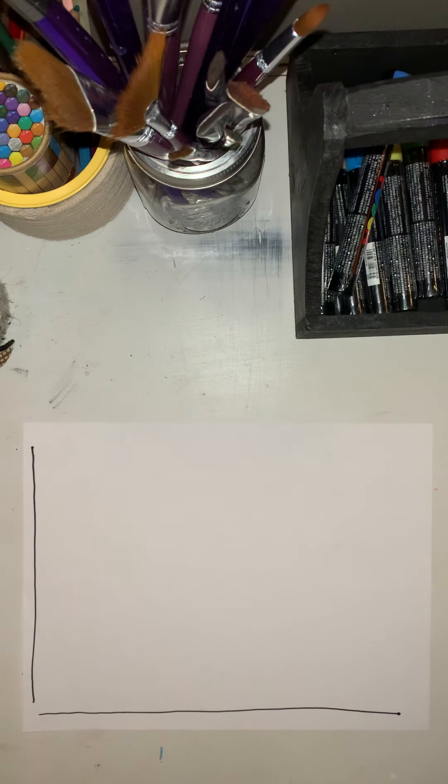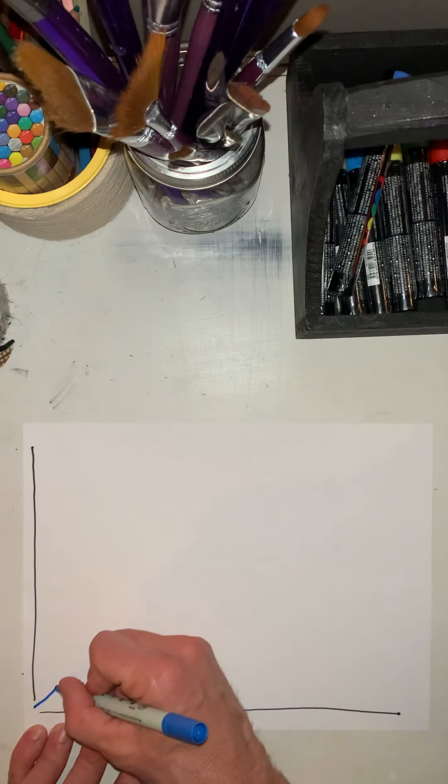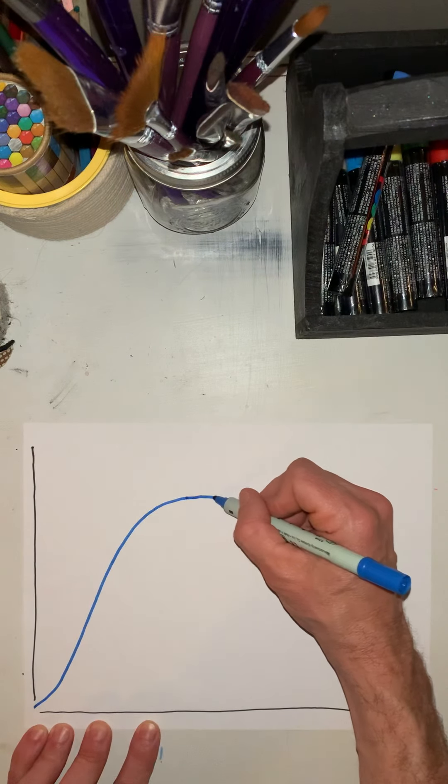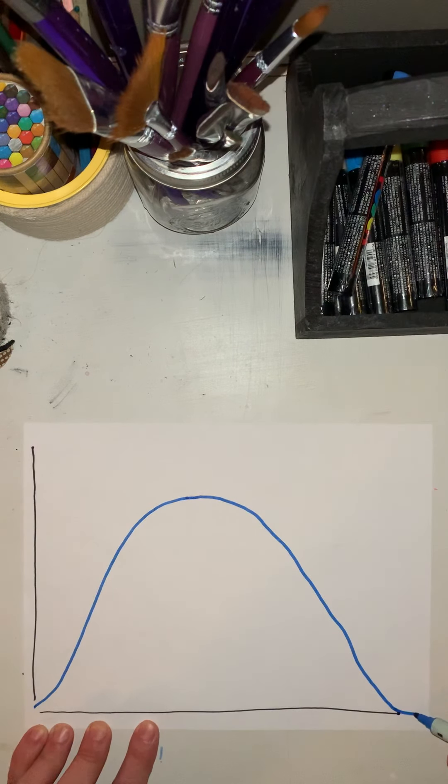Let's first draw the curve that the virus will go through over a period of time. When you contract the virus, the amount of virus in your system grows until it reaches a peak, it plateaus, it decreases until you no longer have the virus.